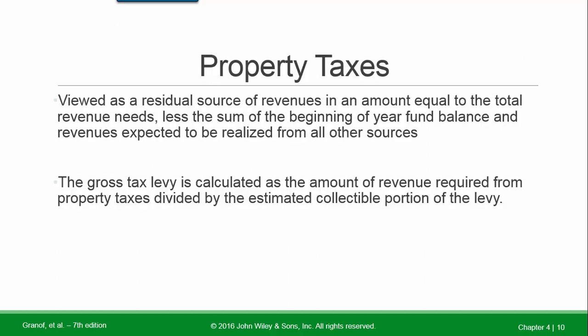Property taxes are viewed as a residual source of revenues equal to total revenue needs less the beginning-of-year fund balance and revenues expected from all other sources. In other words, the entity plans its budget and property tax levy by looking at all its needs, the unassigned fund balance, and revenues from other sources — and what's left is to be received from the property tax levy. The gross tax levy is calculated as the amount of revenue required divided by the estimated collectible portion of the tax levy.